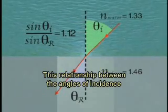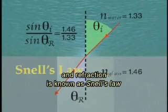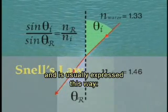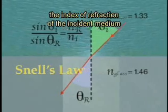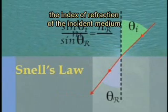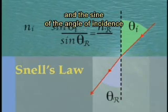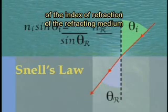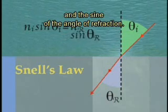This relationship between the angles of incidence and refraction is known as Snell's Law, and is usually expressed this way. The product of the index of refraction of the incident medium and the sine of the angle of incidence is equal to the product of the index of refraction of the refracting medium and the sine of the angle of refraction.